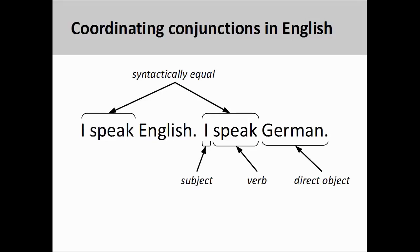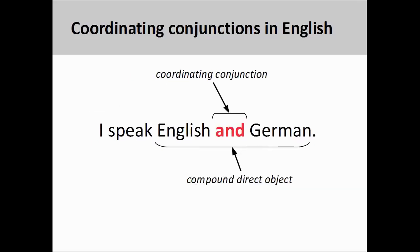Indeed, the first two elements of the sentence are syntactically equal. That is to say, the subjects and verbs of both sentences are exactly the same. As the first two elements of the second sentence are the same, we could merge the two sentences into one by removing the redundant elements and joining the direct objects with a coordinating conjunction, AND. This creates the compound direct object you see on the screen.